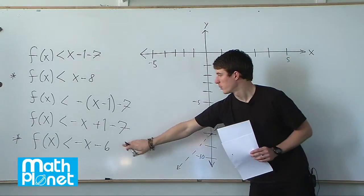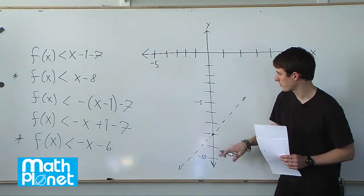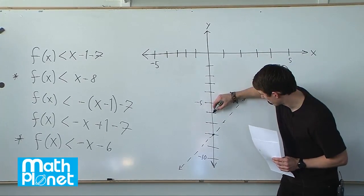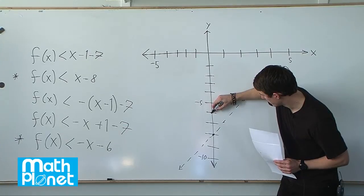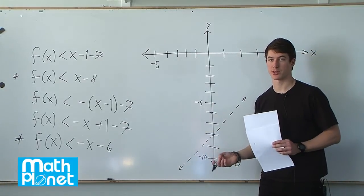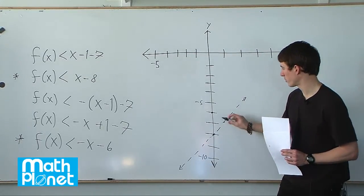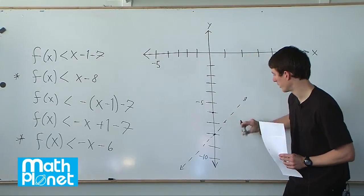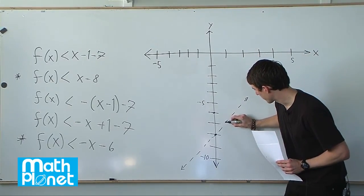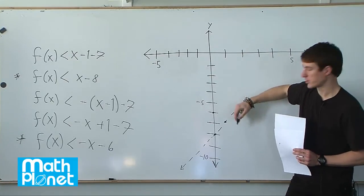And then we have this one. We have a slope of negative 1 and a y-intercept of negative 6. So here, negative 6, and again it's less than but not equal to, so we're going to end up using a dotted line. Slope of negative 1, so the opposite slope of this, so down 1 and to the right 1. So they do, in fact, both cross at this point here. And then again, like I said, connecting with a dotted line.